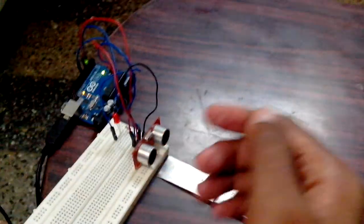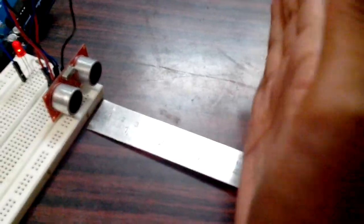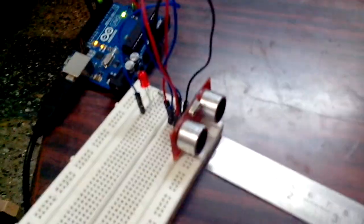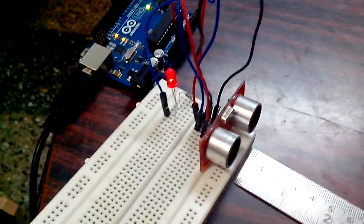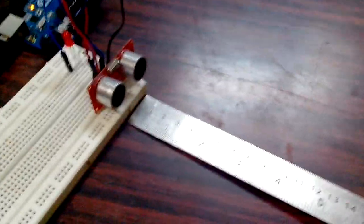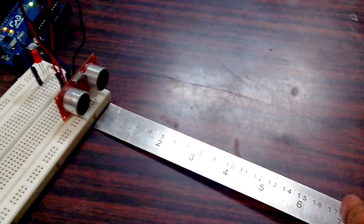So I am keeping my hand at 10 centimeters and you can see that the LED is turned on. The same way, I have also printed the distance at which the obstacle is on the serial monitor of the Arduino software program.